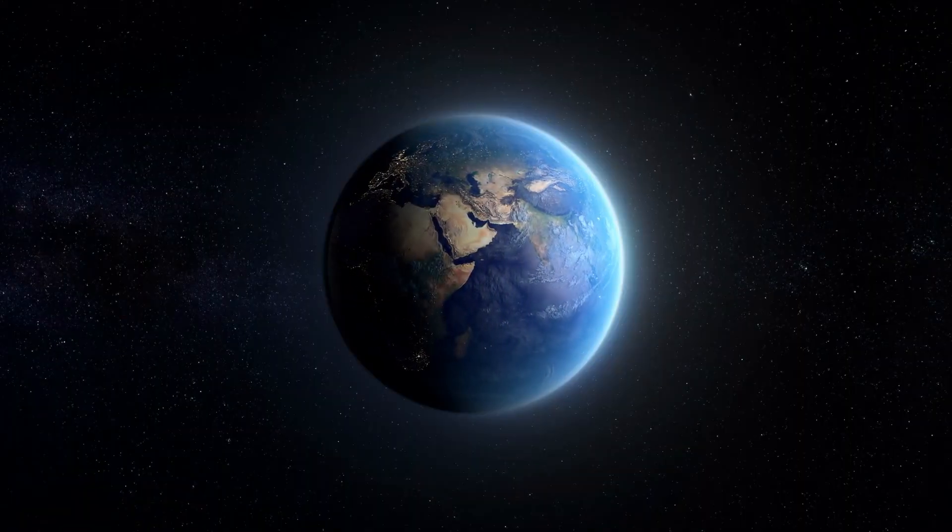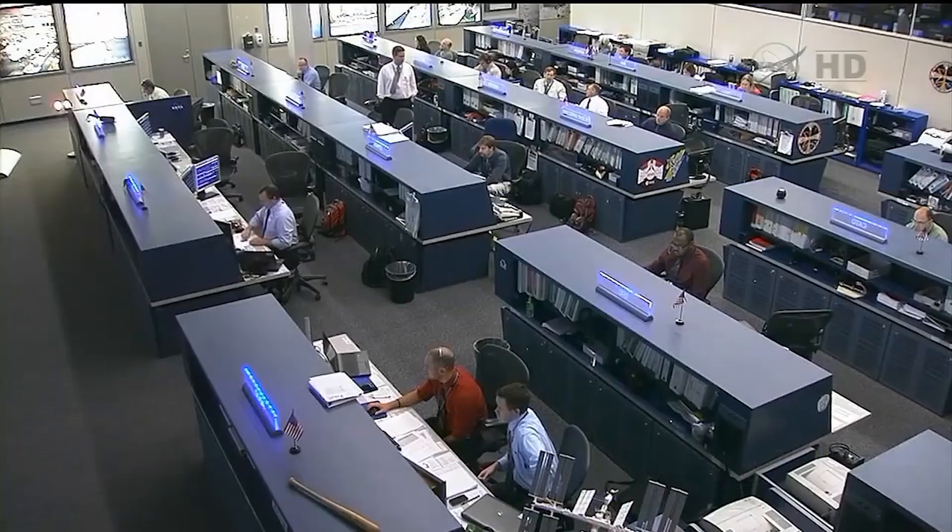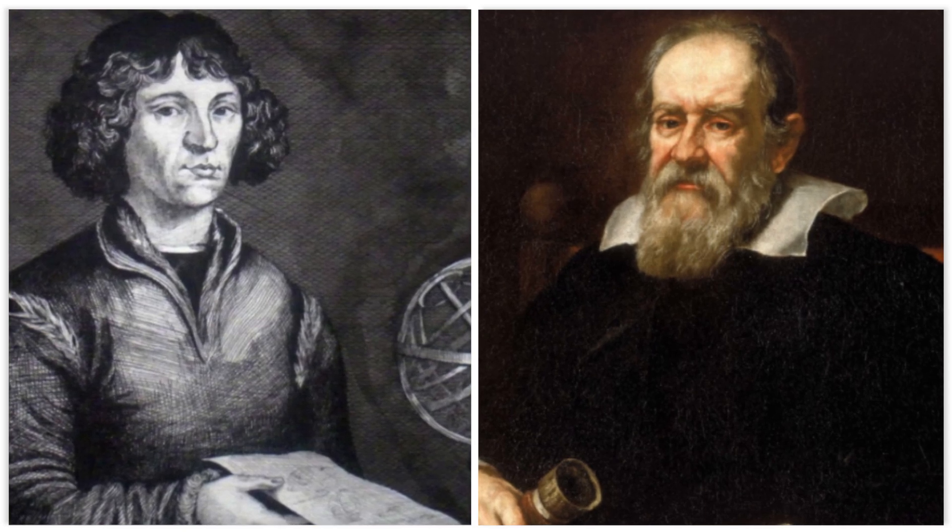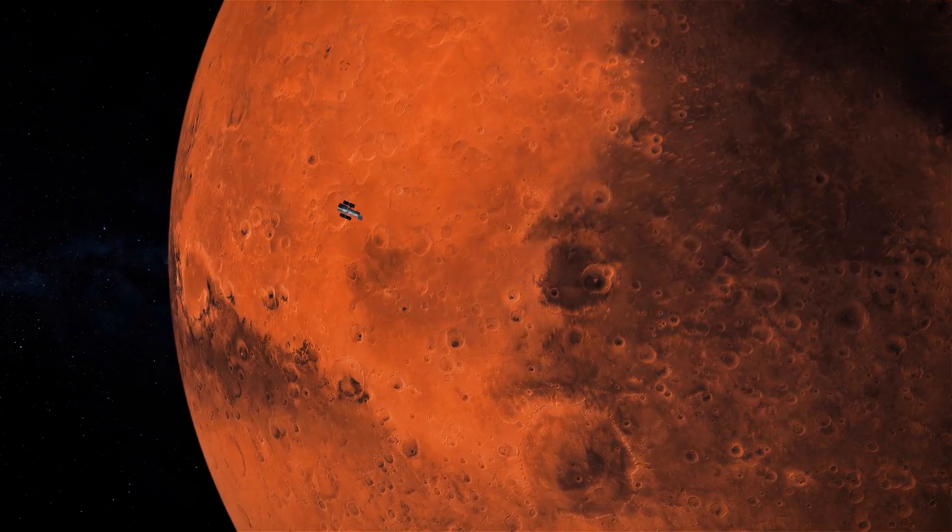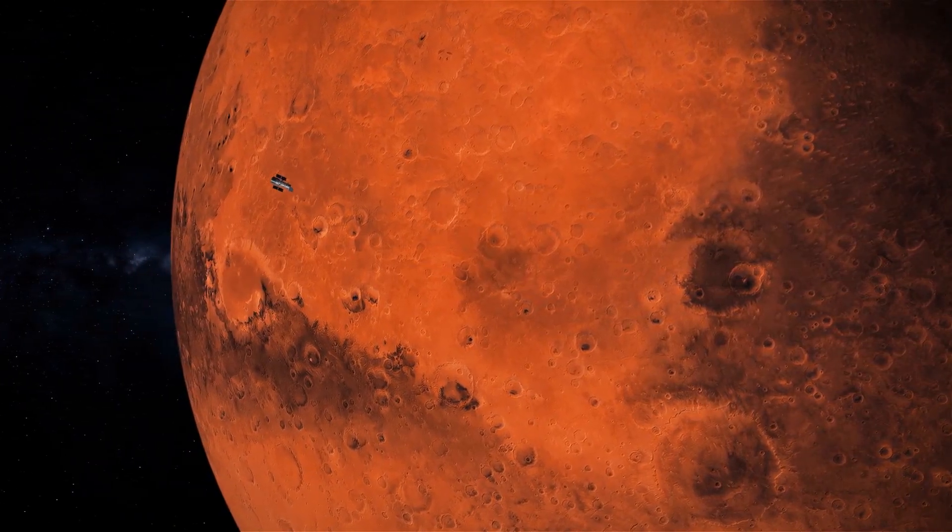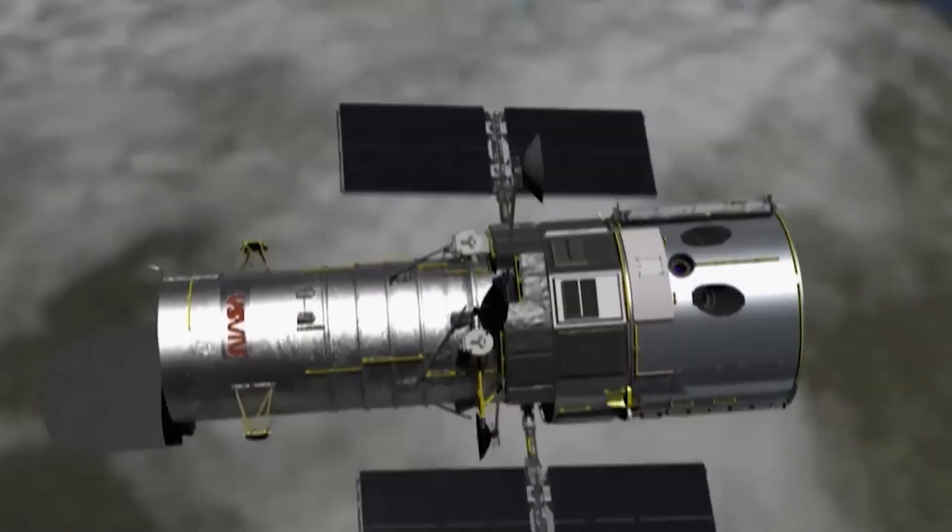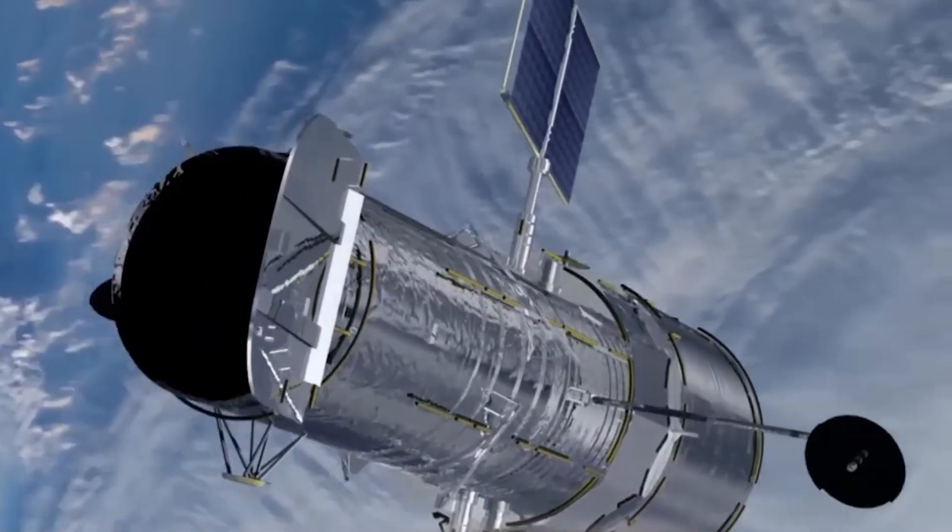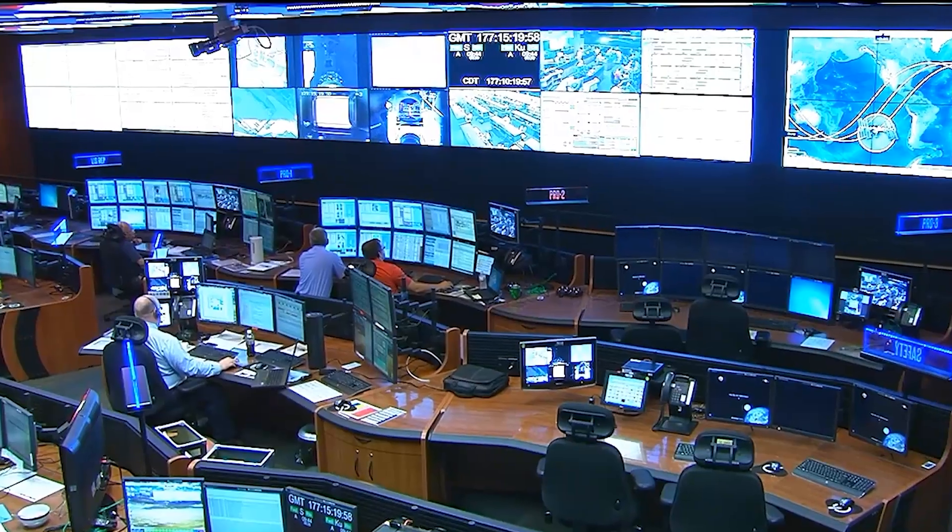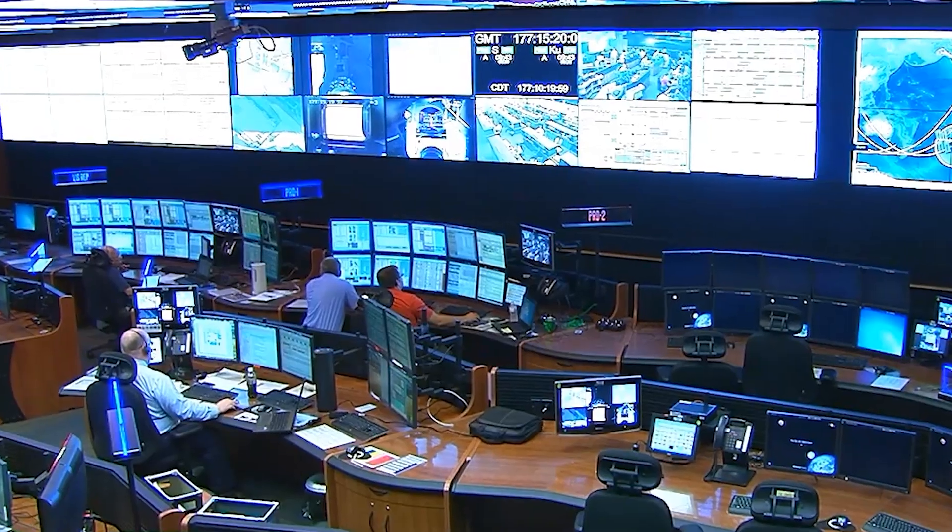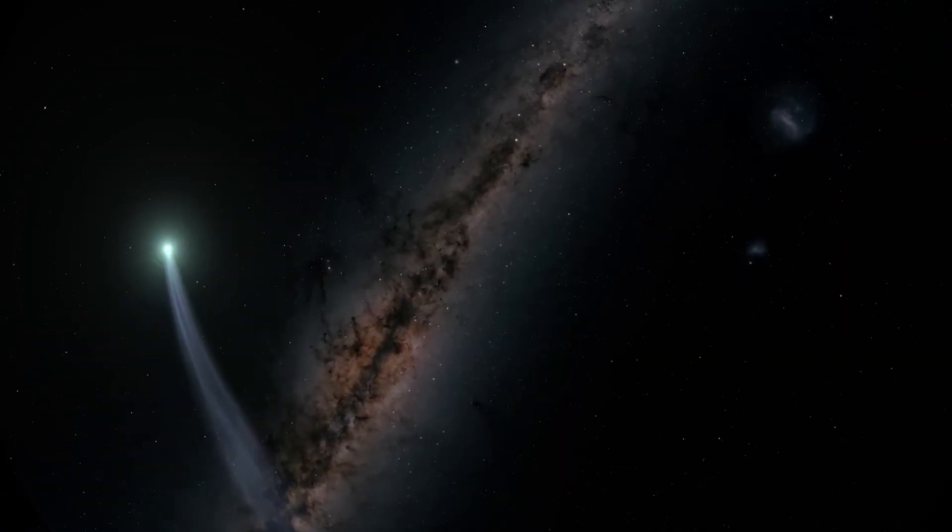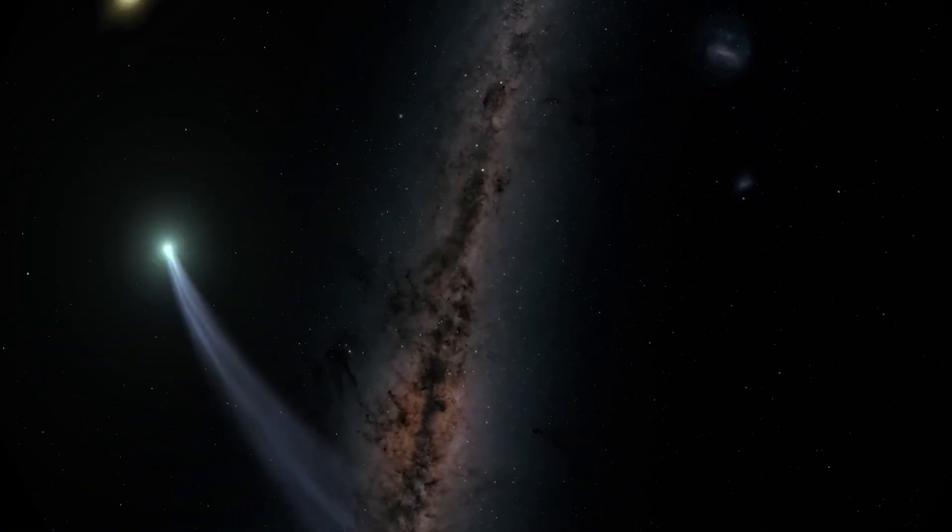We once drew maps with Earth at the very center of creation, a special stage for a divine drama. Then Copernicus and Galileo shattered that illusion, revealing we were just one planet orbiting one star. A few centuries later, Hubble showed us that our star was just one of billions in a galaxy that was itself just one of billions more. Each revelation made us smaller, yet paradoxically made our existence more profound. Now we are standing on the precipice of another great re-evaluation, learning that the very materials that sparked life on our world might have been delivered by cosmic messengers like 3I Atlas.